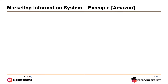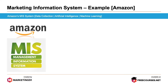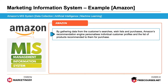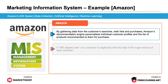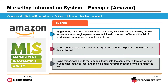Now let's look at the example of Amazon. Amazon's marketing information system comprises data collection, artificial intelligence and machine learning. By gathering data from customer searches, wish lists and purchases, Amazon's recommendation engine personalizes individual customer profiles and the list of products recommended to them for purchase. A 360 degree view of a customer is organized with the help of the huge amount of data collected. Using this, Amazon finds more people that fit into the same criteria through various touch points and makes similar recommendations for their profiles as well.